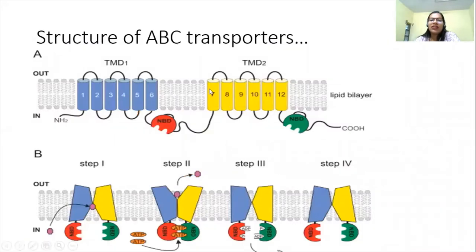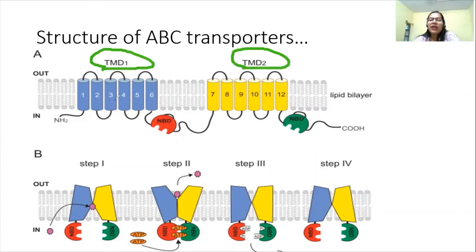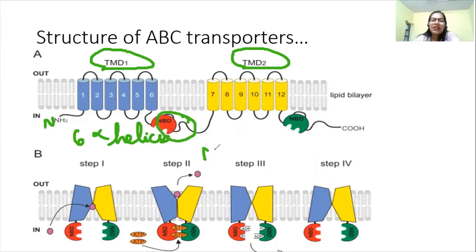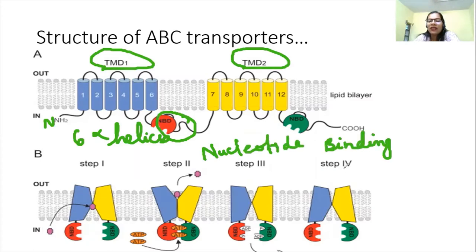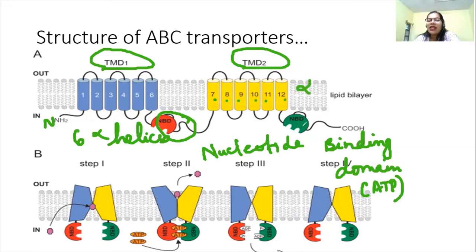Looking at the structure: the ABC transporter has two transmembrane domains, each with six alpha helices. The N-terminal is here with six alpha helices, then there is an NBD — nucleotide binding domain — where ATP binds. Then a second transmembrane domain with another six alpha helices, followed by a second NBD, and then the C-terminal.